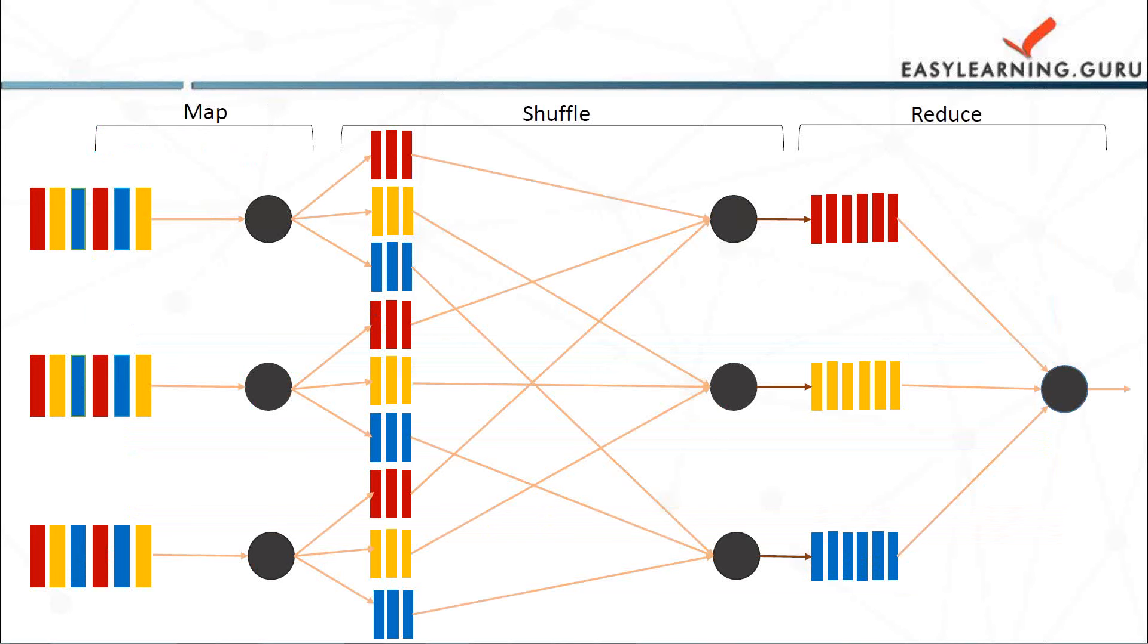Then we have run the user provided map code. So map function is run exactly once for each K1 key value generating output organized by key value K2. Then the third step.